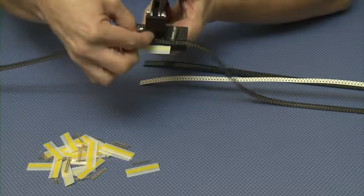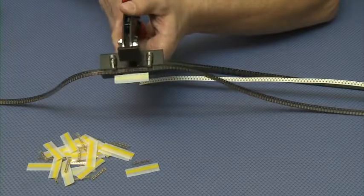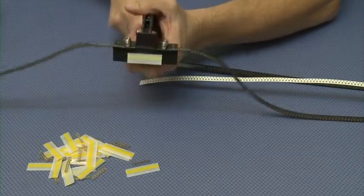Then put the hold down unit there. We will then crimp the carrier tape with the tool.